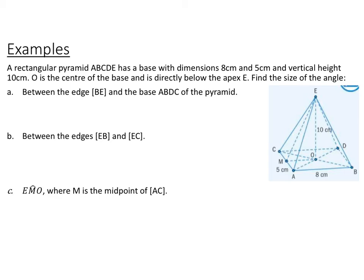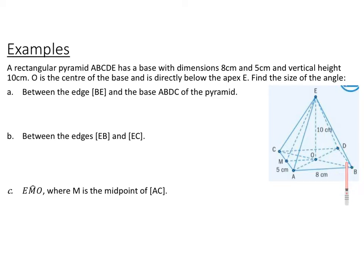We have a rectangular pyramid ABCDE with a rectangular base of dimensions 8 centimeters and 5 centimeters, and the height of the pyramid is 10 centimeters. O is the center of the base, directly below the apex E. The first thing we want to do is find the angle between side BE and the base. Go ahead and pause the video and try that.